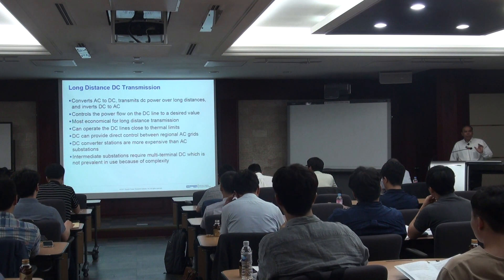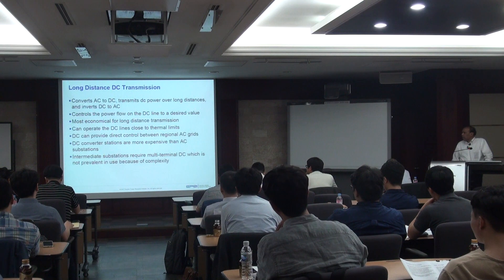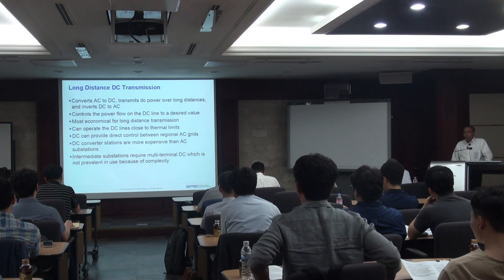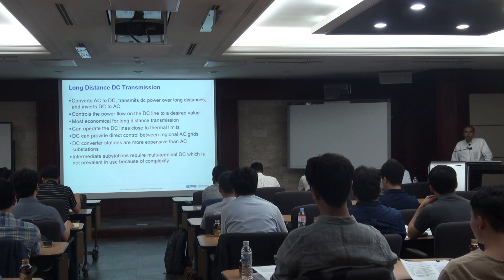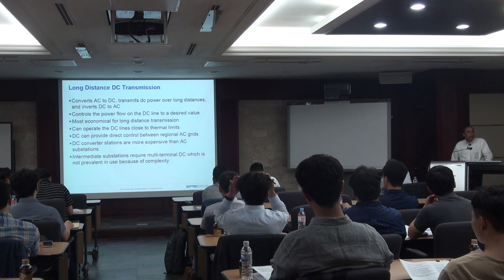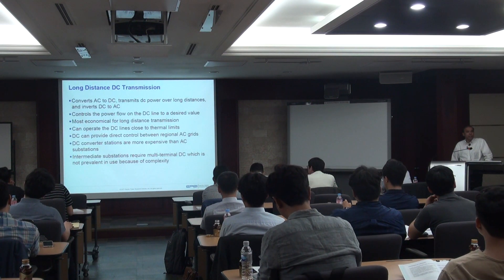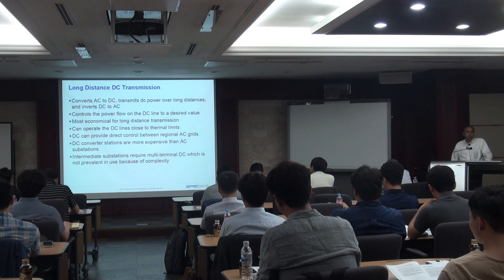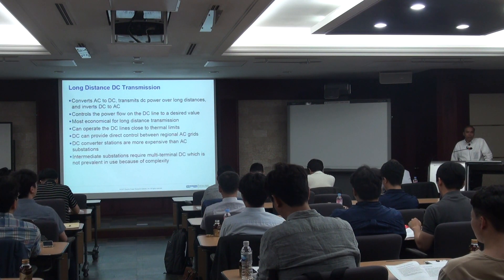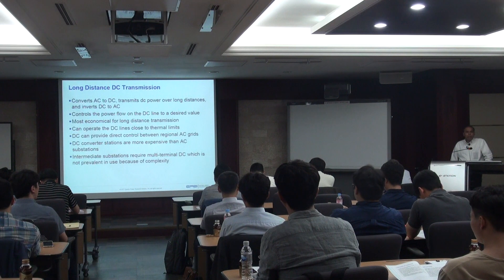DC losses are lower than AC losses. One reason is that with DC there is no reactance effect — even though the line has reactance, when you apply DC voltage only the resistance of the line comes into the picture for transferring power, so the I²R losses are lower. However, the disadvantage is that DC converter stations are expensive power electronics stations.